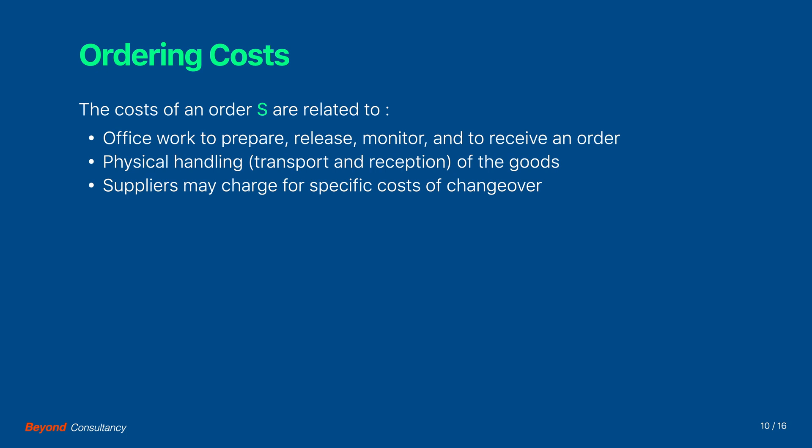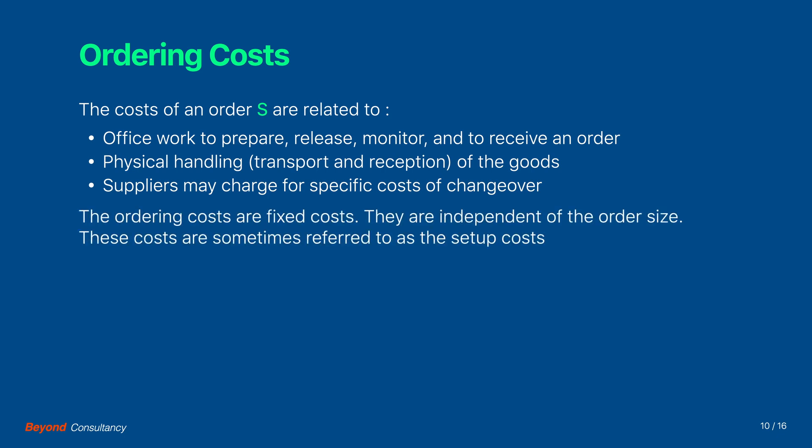The costs of an order, denoted by capital S, are related to the office work to prepare, release, monitor and receive an order, the physical transport and reception of the goods, and thirdly some suppliers may raise extra charges for specific changeover costs incurred by the order. The ordering costs are fixed costs — they are independent of the order size. These costs are sometimes referred to as the setup costs.